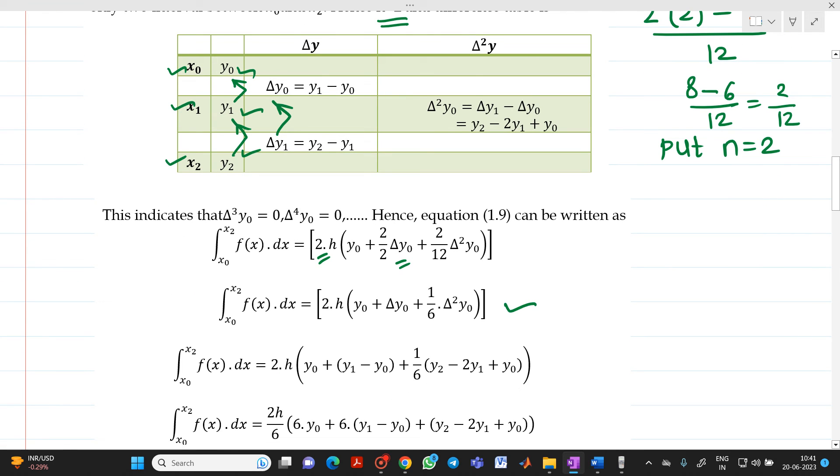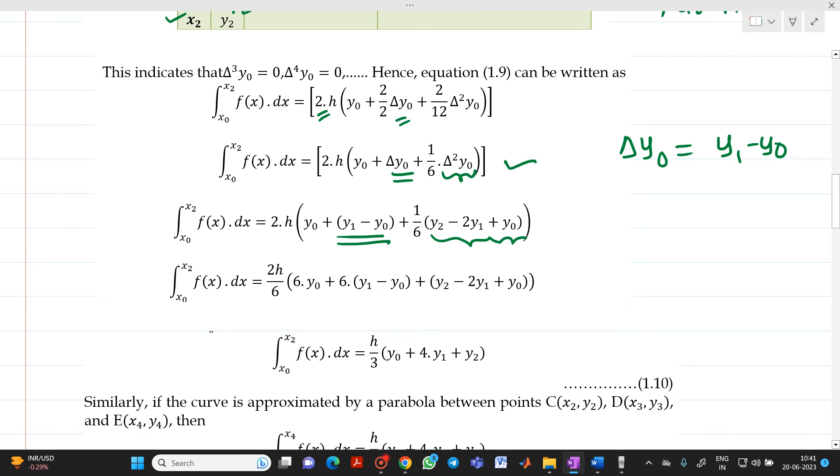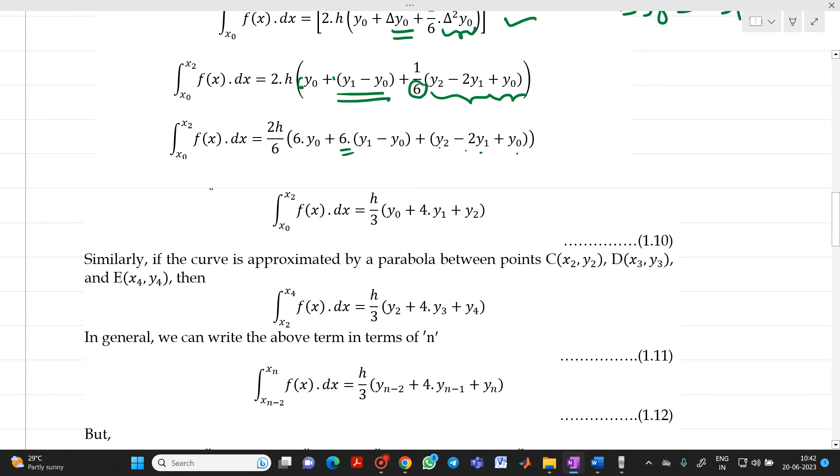But, what is your delta y0? Already, from the above table, we know delta y0 will be equal to y1 minus y0. So, we substitute it here. What is delta² y0? It is y2 minus 2y1 plus y0. We have taken this from this table. So, if you solve it, now what we will do? I will take this 6 outside. So, it will be 2/6 into h. So, you have to multiply here by 6. So, you will get 6y0. You have to multiply here by 6. So, you will get 6y1 minus y0. And this will be y2 minus 2y1 plus y0. So, if you solve this, 2/6 will be h/3. y0 plus 4y1 plus y2.